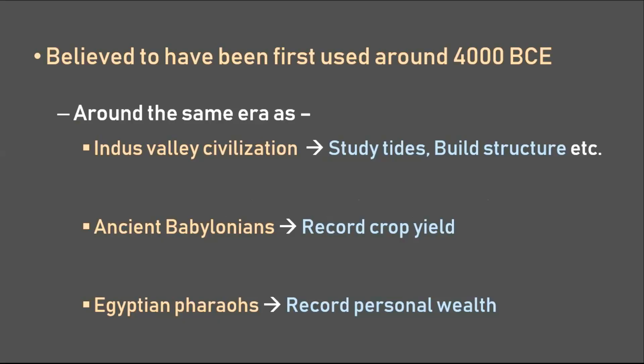We have heard and used the word statistics far and wide, but not all of us know how it came into existence. In this video we'll briefly explore and uncover some part of the history related to statistics by touching upon a few milestones. Statistics is believed to have been used first in around 4000 BCE during the time of the Indus Valley civilization.